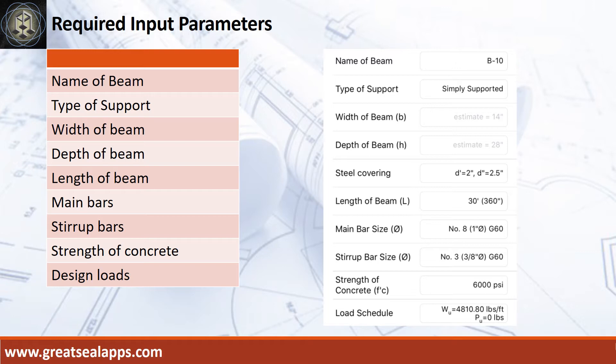Main bars: 1 inch diameter at grade 60. Stirrup bars: 3/8 inch diameter at grade 60. Strength of concrete: 6,000 psi. Total load: 4,810.8 pounds per foot.